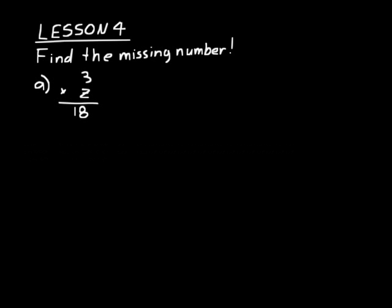Let's do this problem: 3 times z equals 18. Any time you have a letter there, that's the missing number the letter is representing. So instead of saying z, you can say 'what?' — 3 times what equals 18? Hopefully you already know that 3 times 6 equals 18, so the answer is z equals 6.